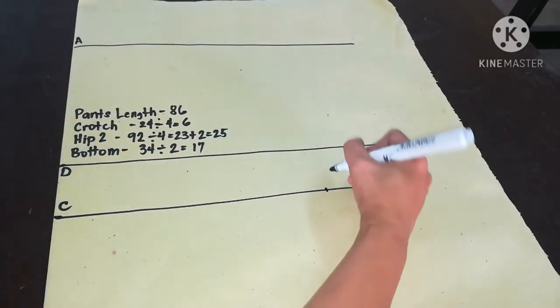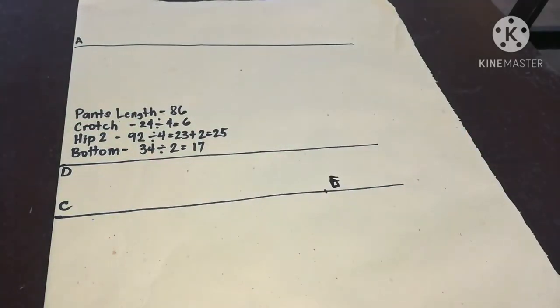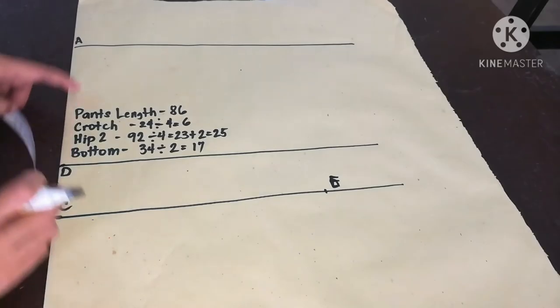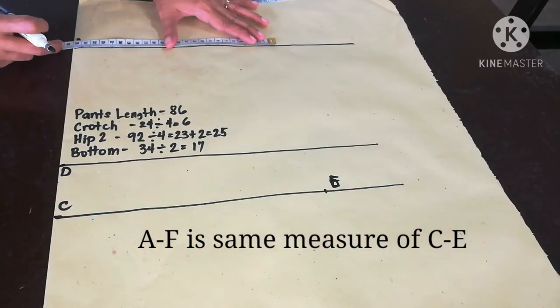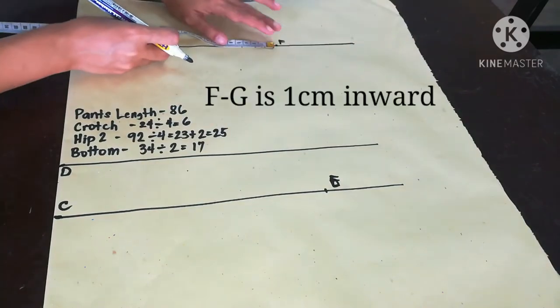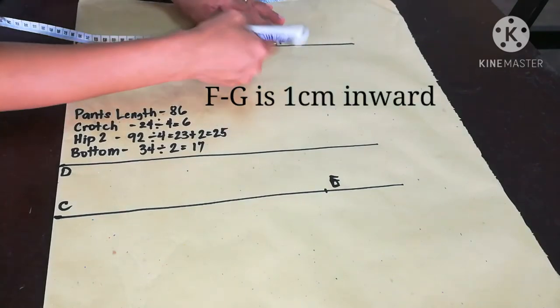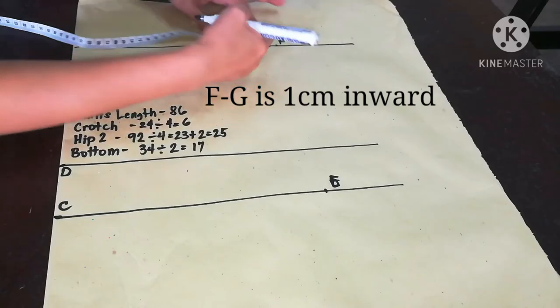Mark this point E. And then A to F is same measure of C to E, so it is also 25 cm. Then G, 1 cm inward from F.